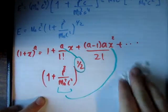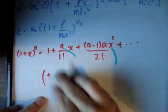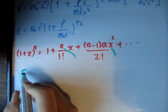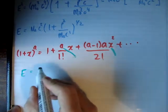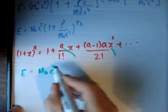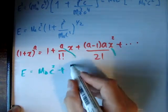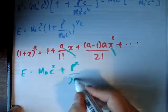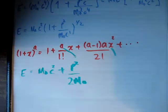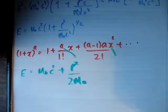Applying this expansion, we find very quickly that E is equal to m₀c² plus p squared over 2m. P squared over 2m is the kinetic energy term.